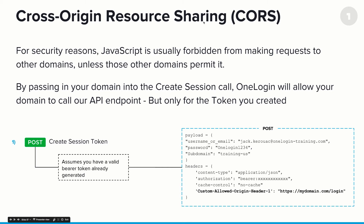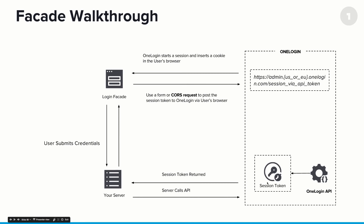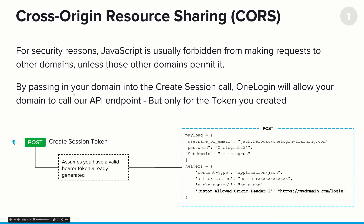Normally, you're not allowed to make cross-domain POST operations to other websites unless expressly allowed by those domains. To enable CORS, you pass your domain into the create session call. As part of that backend call, you pass in the actual URL of your login facade. By passing your domain into the create session call, OneLogin will allow your domain to call the API endpoint, but only for the token you created. You pass in a custom allowed origin header with your specific login page, so when OneLogin sees a cross-domain call from that login page along with the matching token, it allows the cross-domain API call to take place.